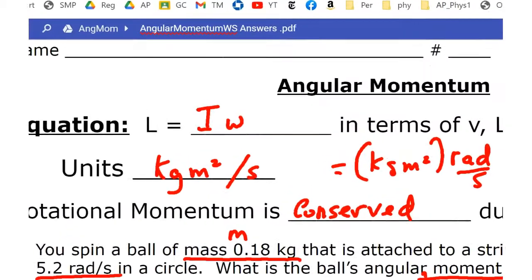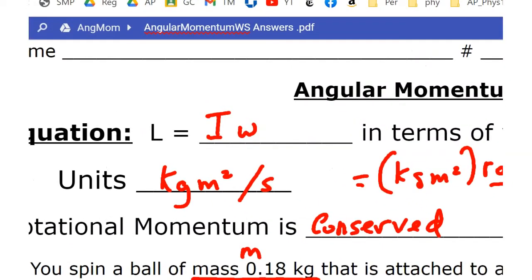Oddly enough, angular momentum is L, and it's I times ω because, remember, momentum is M times V. The analog of mass is moment of inertia, and the analog of velocity is angular rotational velocity. So I times ω, moment of inertia times rotational velocity.